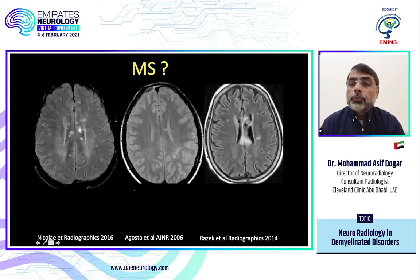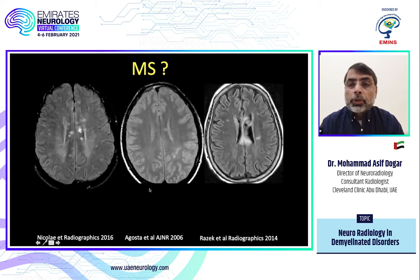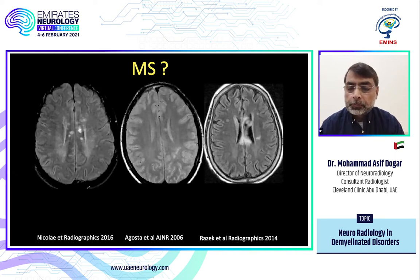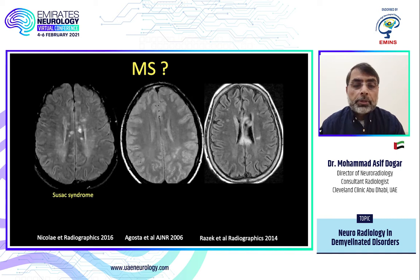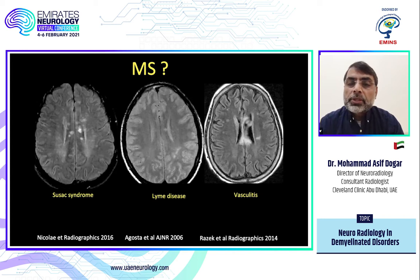Before we go further, I will show you these three cases so you can think about which one has MS. The first case is Susac syndrome, the second one is Lyme disease, and the third one is vasculitis. I showed these cases to emphasize that these white matter changes are very common and not all of them are MS.